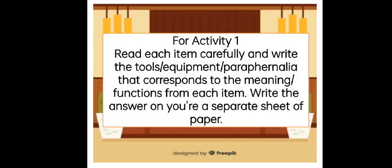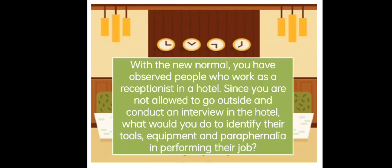For Activity 1, read each item carefully and write the tools, equipment, and paraphernalia that corresponds to the meaning functions from each item. Write the answer on a separate sheet of paper. With the new normal, you have observed people who work as a receptionist in a hotel. Since you are not allowed to go outside and conduct an interview in the hotel, what would you do to identify their tools, equipment, and paraphernalia in performing their job?